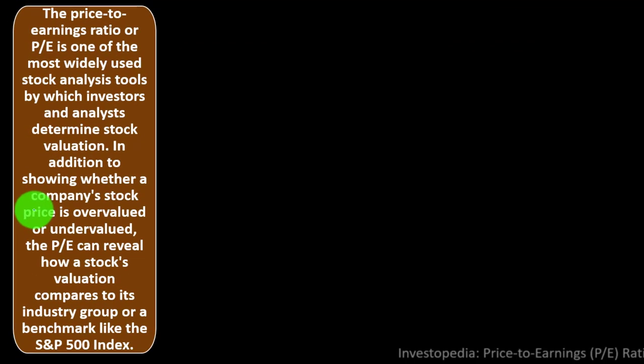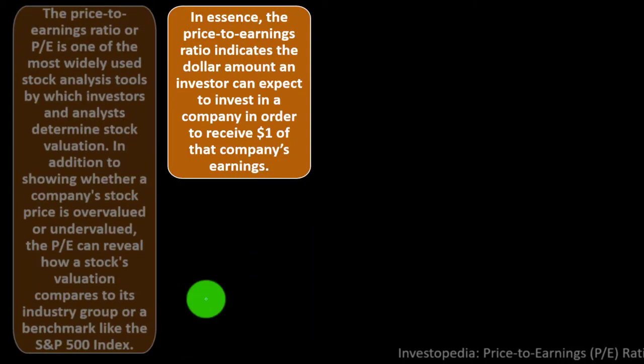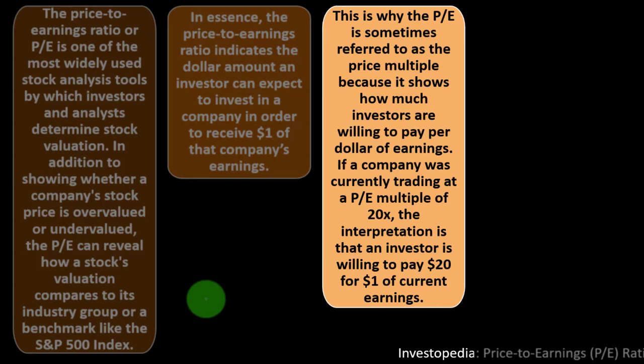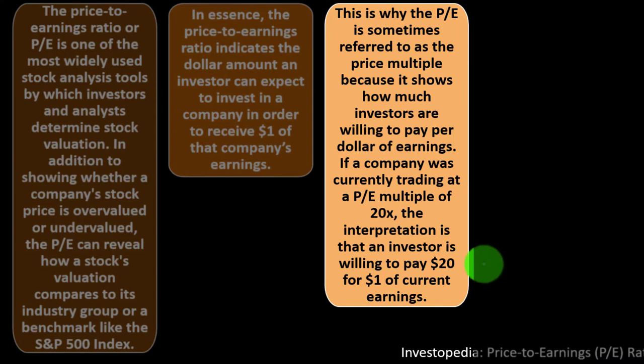Valuation from PE: The price to earnings ratio is one of the most widely used stock analysis tools for determining stock valuation. In addition to showing whether a stock is overvalued or undervalued, the PE can show how a stock's valuation compares to its industry group or a benchmark like the S&P 500. In essence, the PE indicates the dollar amount an investor can expect to invest in a company in order to receive one dollar of that company's earnings. This is why the PE is sometimes referred to as the price multiple — it shows how much investors are willing to pay per dollar of earnings. If a company trades at a PE multiple of 20x, the investor is willing to pay $20 for one dollar of earnings.